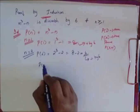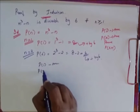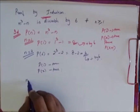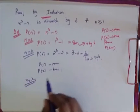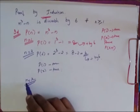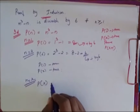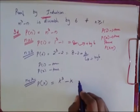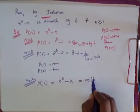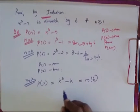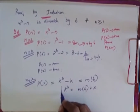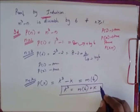So for P of 1, it is true. For P of 2, it is true. So now I consider that for P of K also it is true. So when my N is equal to K, my P of K is equal to K cubed minus K, which is equal to some multiple of 6 plus K. Remember this — we will use it further.